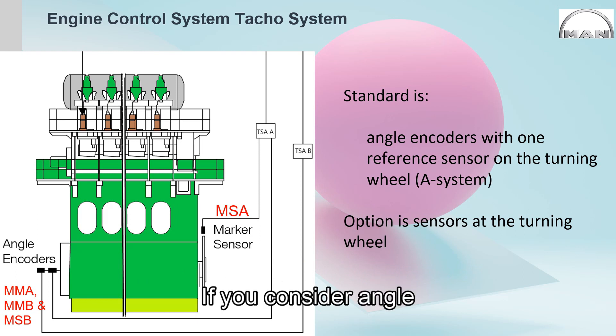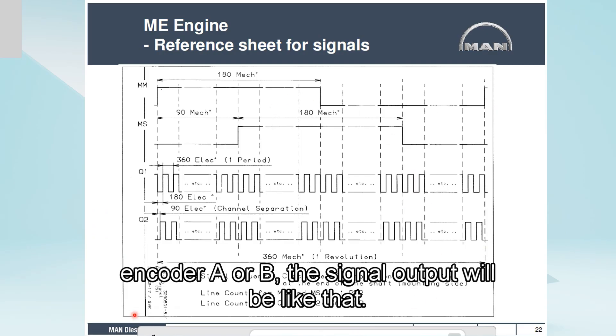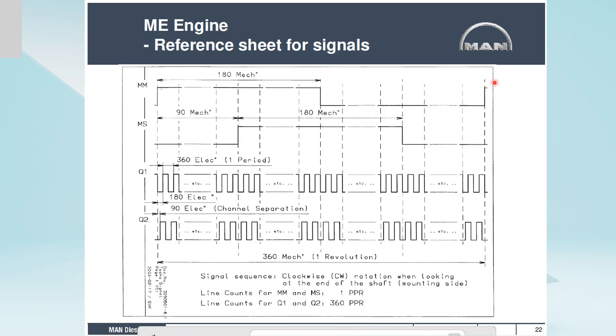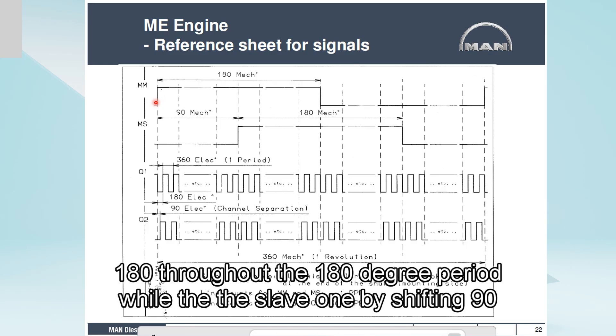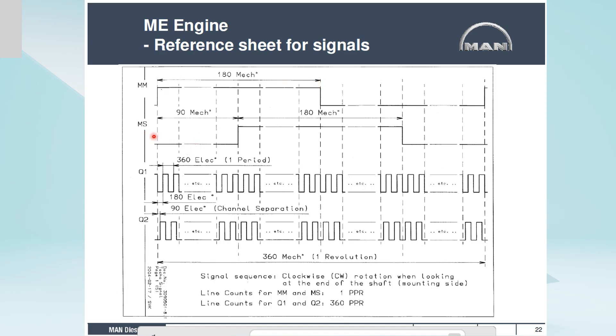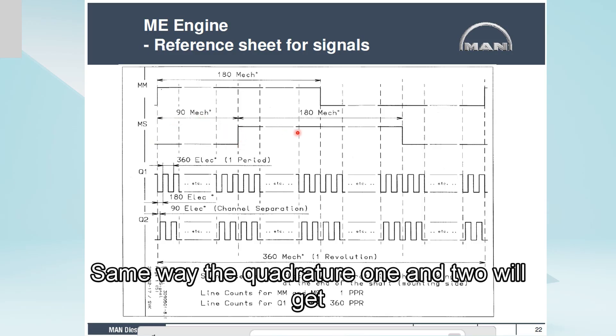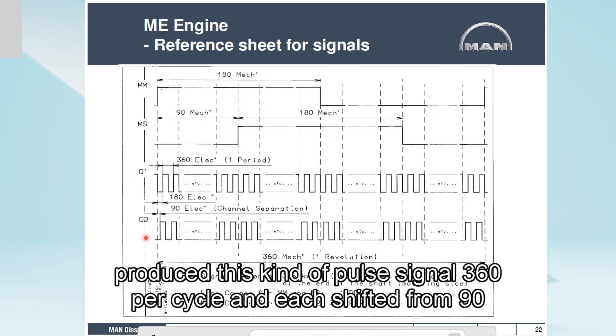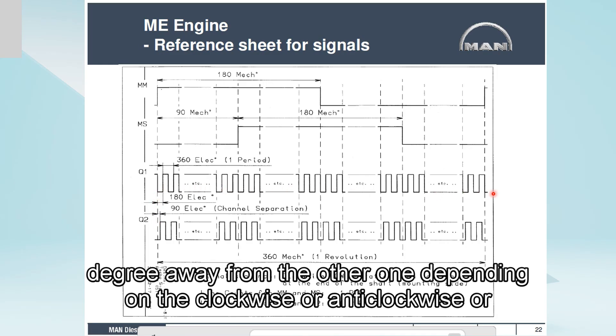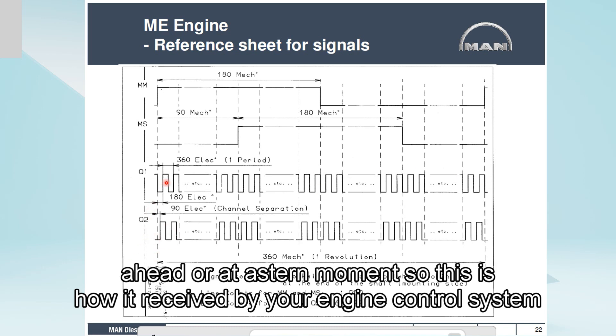If you consider angle encoder A or B, the signal output will be like this: the master sensor will activate throughout the 180 degree period, while the slave one, by shifting 90 degrees, will get high the same way. The quadrature 1 and 2 will produce this kind of pulse signal, 360 per cycle, each shifted 90 degrees away from the other one, depending on clockwise or anti-clockwise direction. This is how it's received by your engine control system.